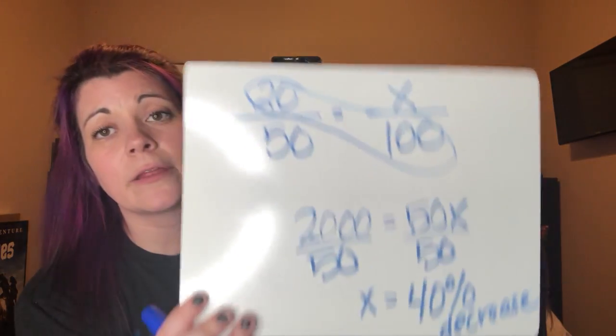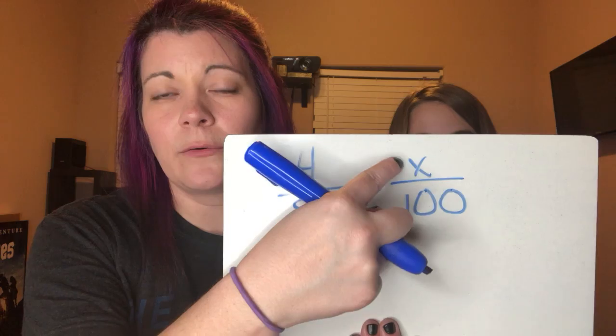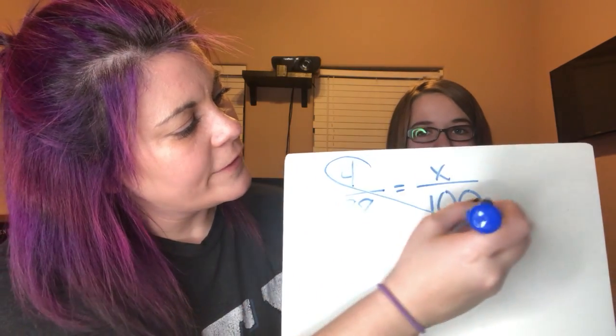That's important — you need to know if it's an increase or decrease. If it goes up, it's an increase; if it goes down, it's a decrease. Last six weeks Joseph Lawhorn made an 88 average in class; this six weeks he made a 92. We went from 88 to 92, so that's an increase. The difference is 4 (92 minus 88), and the original is 88. So we put 4 over 88 equals x over 100.